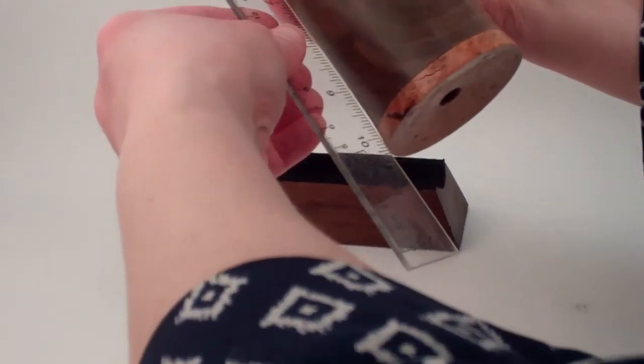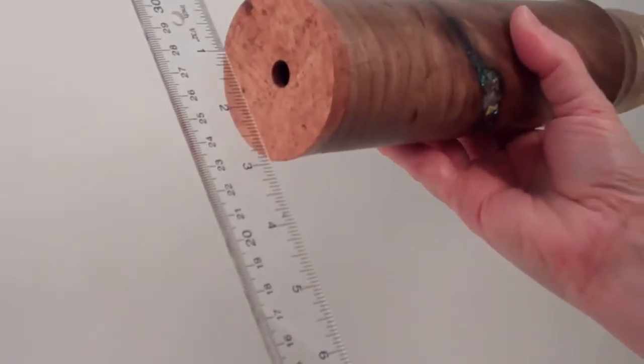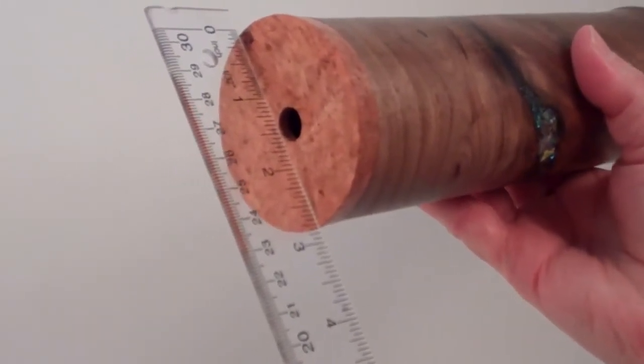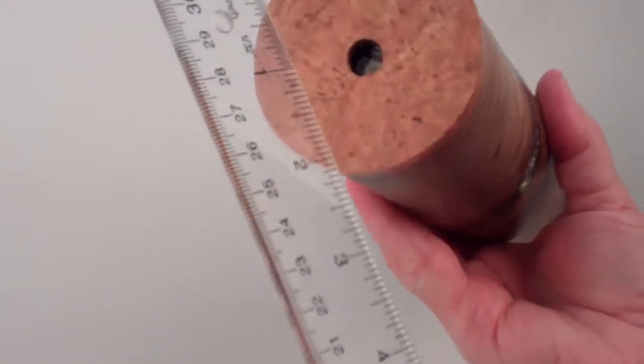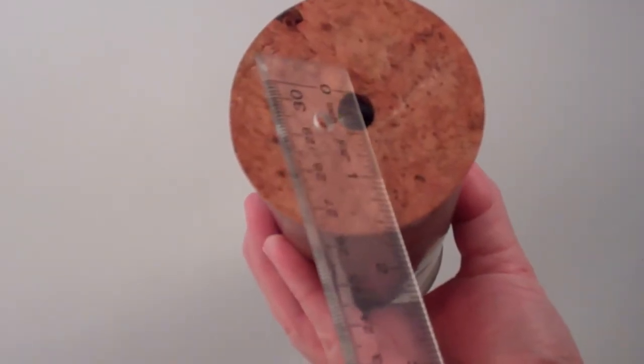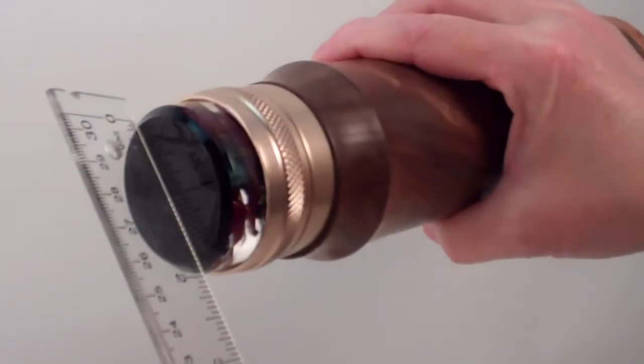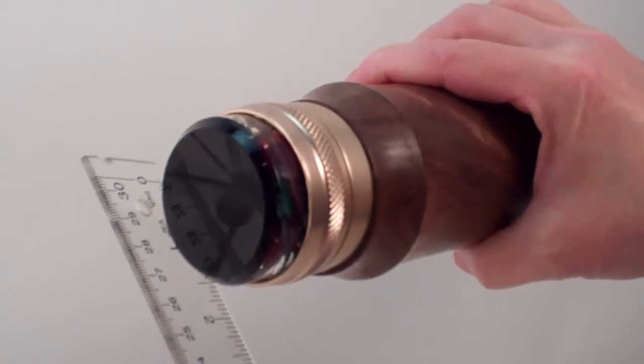The kaleidoscope itself has a total length of about ten and a quarter inches, diameter across the eyepiece at two and three quarter inches, and the opening to the mirror system is about three eighths of an inch. The diameter across the object chamber is right at two inches.